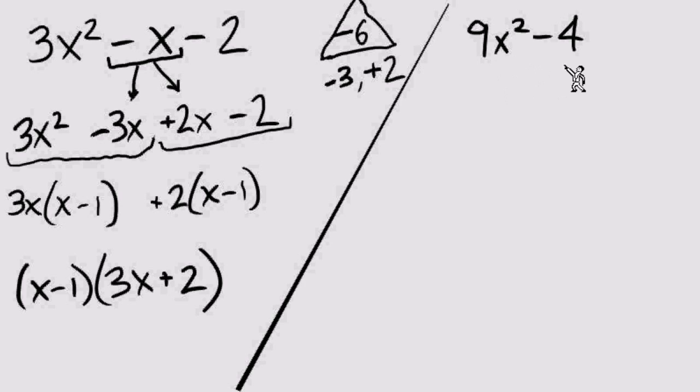There is no GCF from these two terms, so next we're thinking about some options when it comes to factoring binomials that have two terms. Do we have two squares? We actually do have a difference of squares.